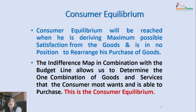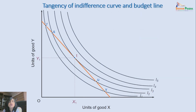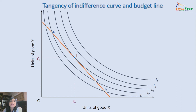We have superimposed the budget line (in orange) on the indifference map. Consumer equilibrium is at the point where the highest possible indifference curve becomes tangent to the budget line. The budget line meets the indifference curves at points R, S, T, U, and V — all of which are combinations the consumer can afford. The question is which of these points — R, S, T, U, or V — maximizes the consumer's utility.